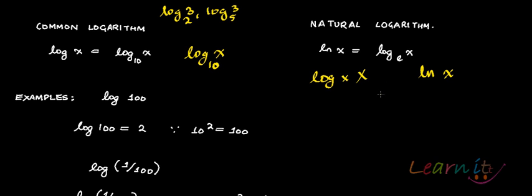Natural log of x, written as ln(x), is equivalent to log of x to the base e, where e is the base in this case.